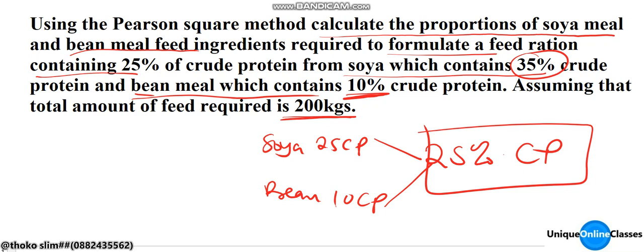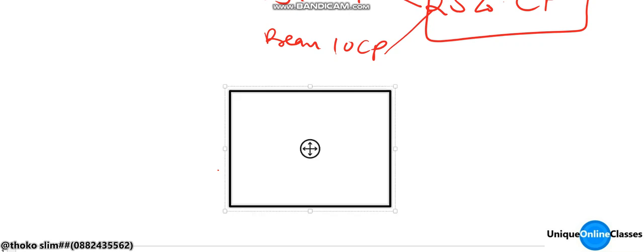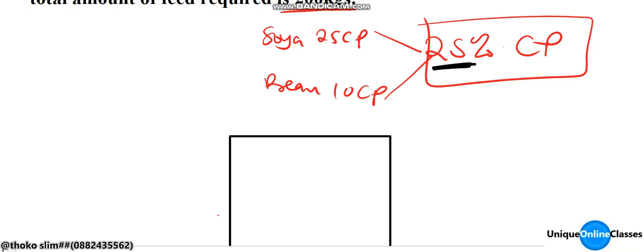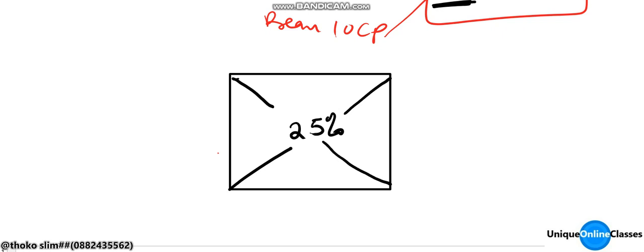Here we're going to draw a square. So I'm drawing a square here — this is the square. For the second step, we're going to place the desired percentage in the center. The required crude protein is 25%, so we're going to put 25% at the center. For the third step, we're going to draw diagonals.